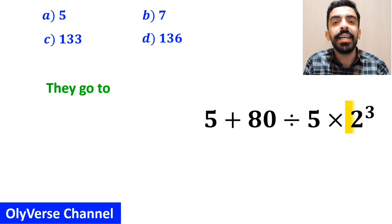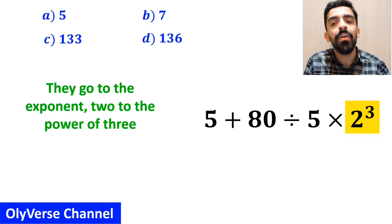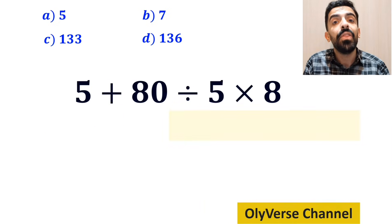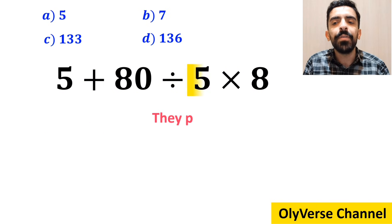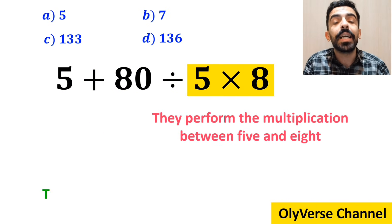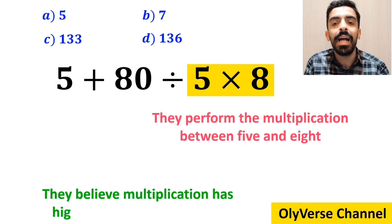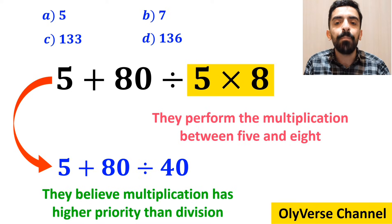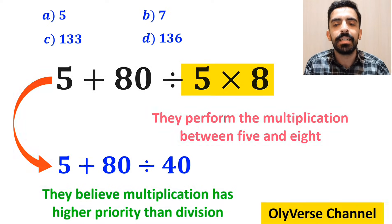In the next step, they go to the exponent 2 to the power of 3 and simplify this expression to 5 plus 80 divided by 5 times 8. Then they perform the multiplication between 5 and 8, because they believe multiplication has higher priority than division. So, instead of this expression, they write 5 plus 80 divided by 40.